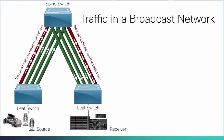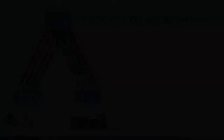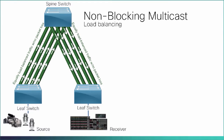Because traffic flows in a broadcast network are generally heavy and few in number, you cannot rely on the standard ECMP approach to load balance these flows. Cisco has developed a non-blocking multicast algorithm, or NBM, to ensure that traffic flows in a broadcast network are efficiently load balanced with regard to link utilization. NBM ensures zero-drop multicast transport and prevents link over-subscription.